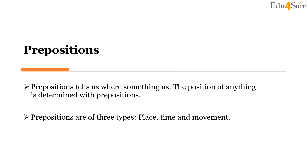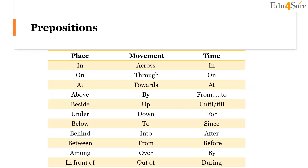Prepositions are the ones that tell us the position of anything. The position of anything is determined with prepositions. Prepositions are of three types: place, time, and movement. These are some of our prepositions.